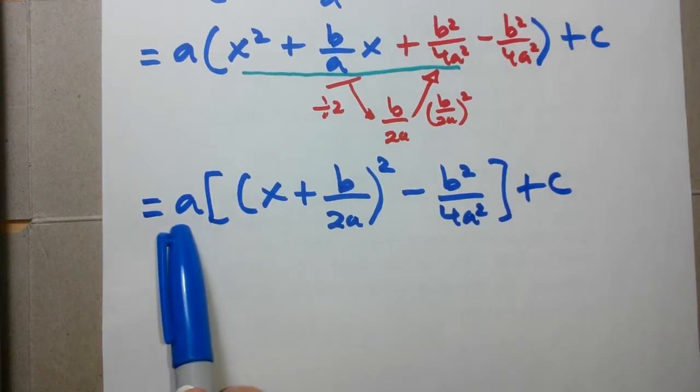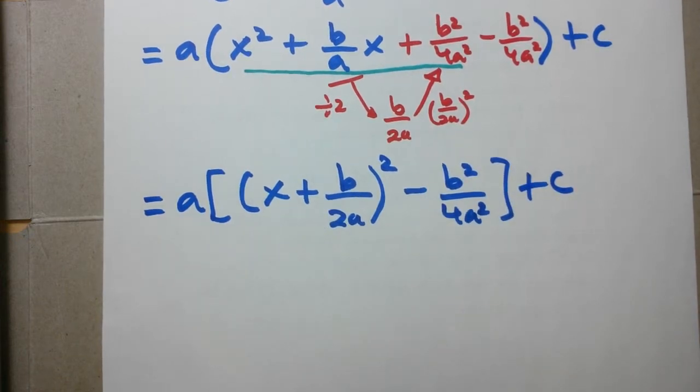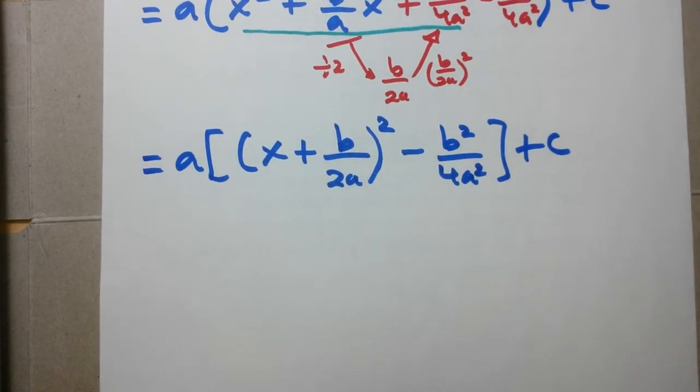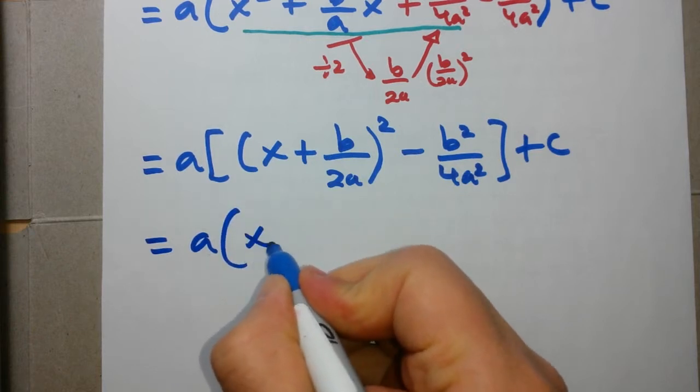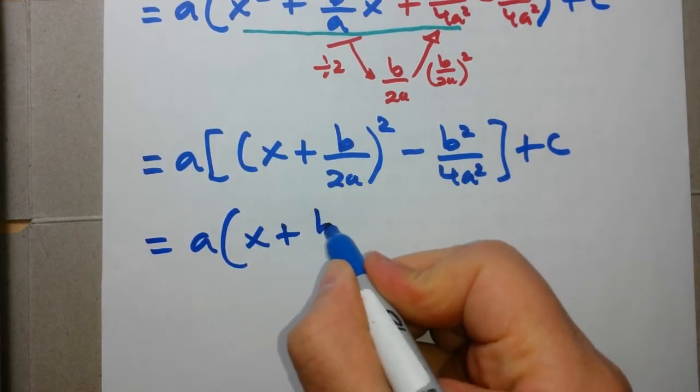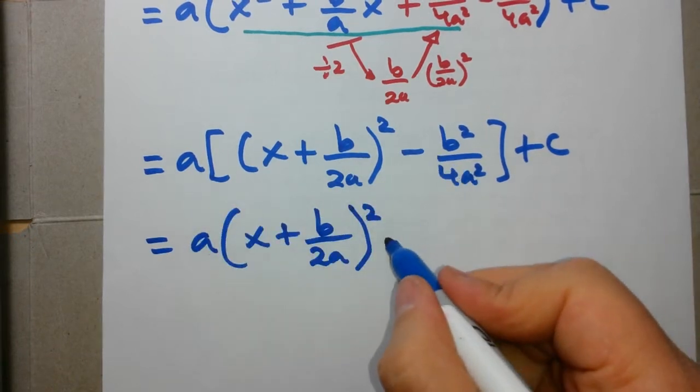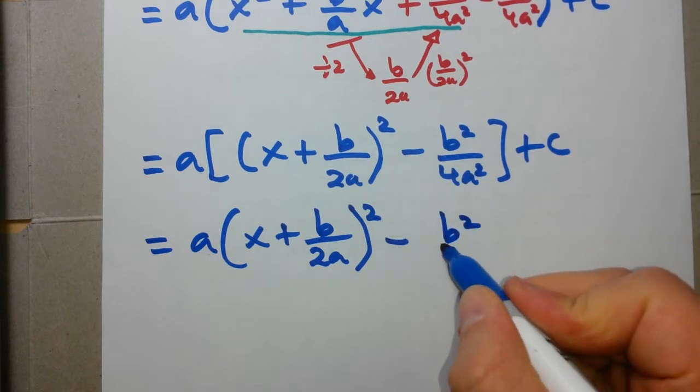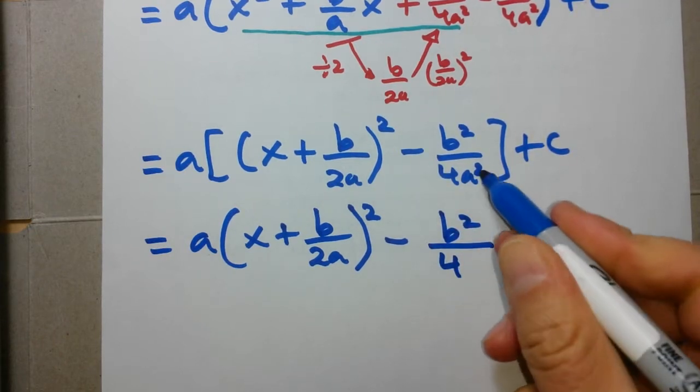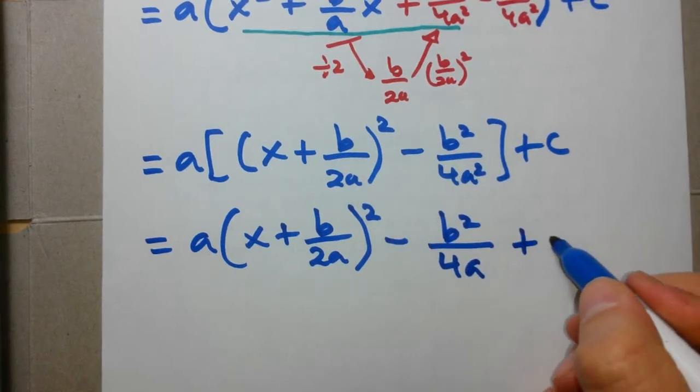Next, we need to bring the a into the square brackets, so we use the distributive law for that. So a times this expression will give us a times x plus b over 2a squared, and positive times negative is negative. A times this expression will give us b squared over 4. The a squared here will cancel out, so we end up with 4a at the bottom, plus c.